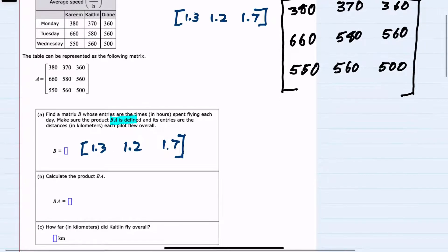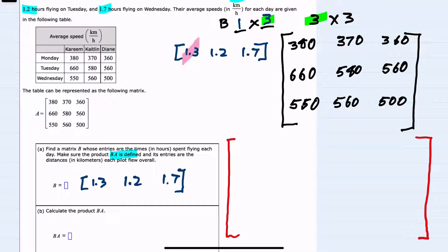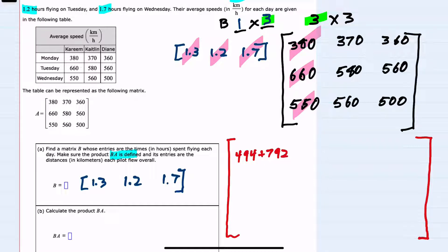For part B, we go ahead and do the multiplication. Starting with the first row times the first column: 1.3 times 380 is 494, plus 1.2 times 660 is 792, plus 1.7 times 550 is 935. Adding these together gives us 2,221 for our first cell.